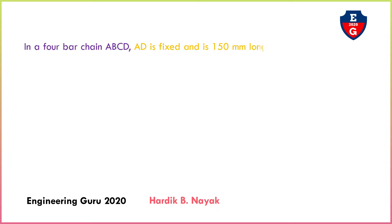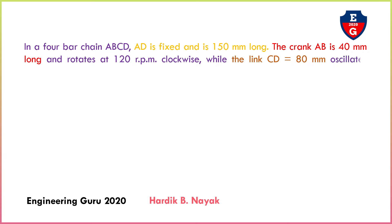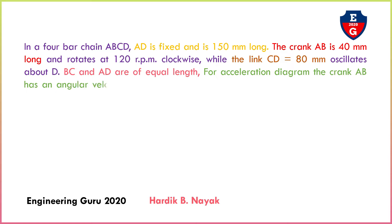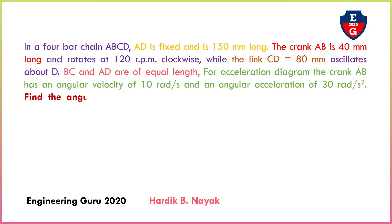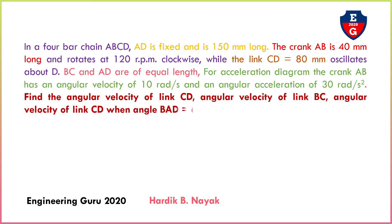Here is the problem: a four bar chain ABCD where AD is fixed and 150 mm long. The crank AB is 40 mm long and rotates at 120 rpm. Link CD is 80 mm and oscillates about D. BC and AD are equal in length. The acceleration diagram for crank AB has angular velocity 10 rad per second and angular acceleration 30 rad per second square.